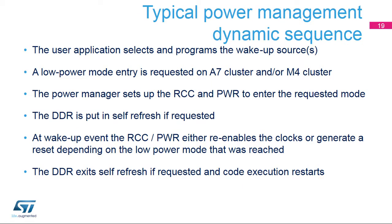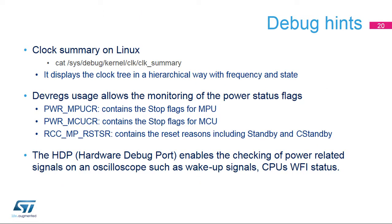Here is an overview of a low power entry-exit sequence. The low power entry is initiated by the user application. On the Linux side, all activity is suspended. Then the RCC and PWR are programmed. It is assumed that the user has enabled at least one wake-up source. The last step is to put the DDR memory in self-refresh state if this option is selected. From this moment, the platform is in low power mode, waiting for a wake-up event. When a wake-up event happens, the RCC and PWR restore the clocks and power before allowing the software to run.